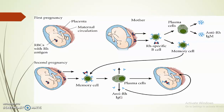Here we can see the fetus, the placenta, and the maternal circulation. The fetus has Rh antigen. During delivery, the RBCs of the fetus come in contact with the mother's circulation, sensitizing the mother. Rh-specific B cells get activated, proliferate to produce plasma cells and memory cells, and the plasma cells produce antibodies. During the second pregnancy, these memory cells easily identify the Rh antigens, proliferate, produce antibodies, and these antibodies bind to the Rh antigen of the fetus, resulting in destruction of fetal RBCs — erythroblastosis fetalis — and jaundice.